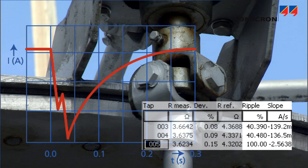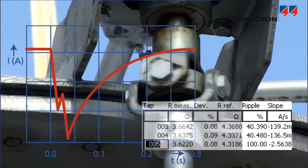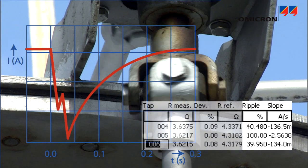If all the tap changer's taps are in good condition, this dynamic resistance measurement will deliver similar results for all taps.